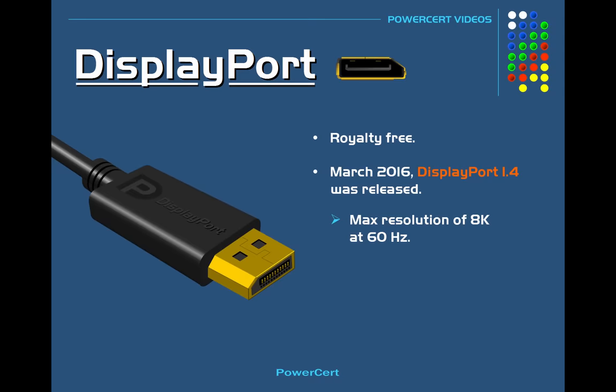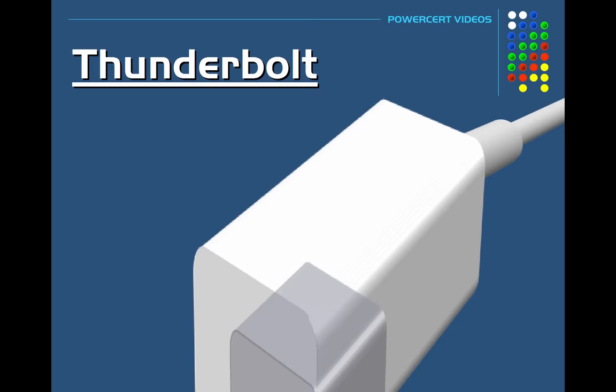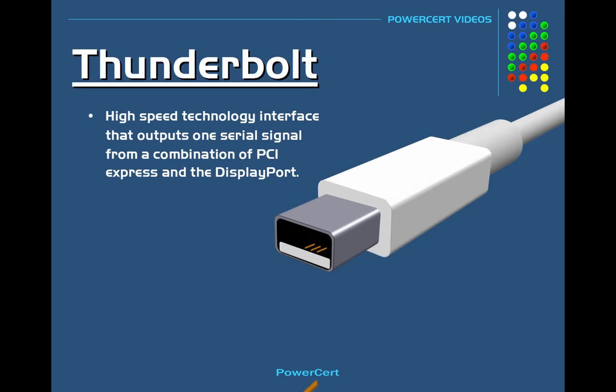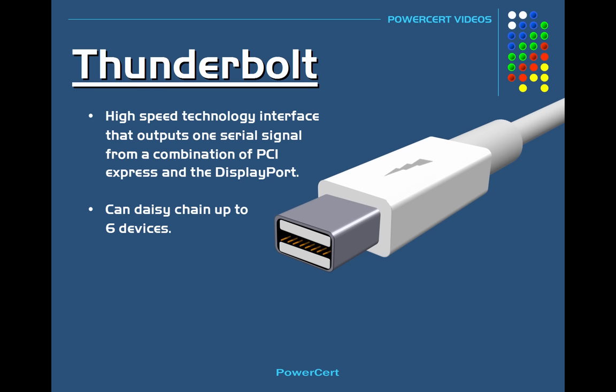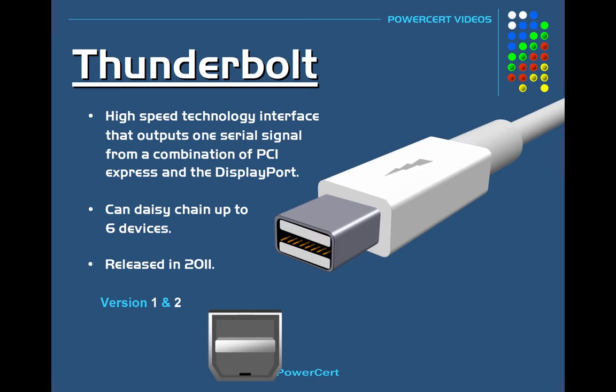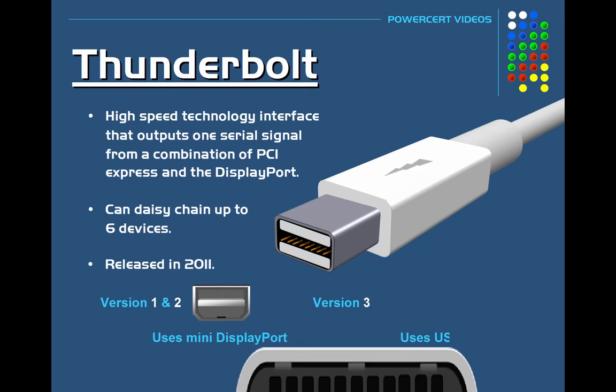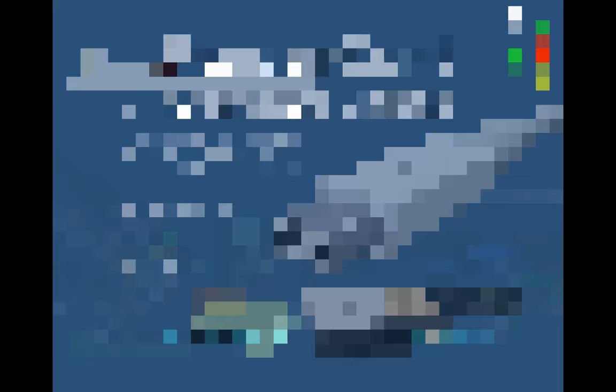The last port we're going to talk about is Thunderbolt. Thunderbolt is a high-speed technology interface that outputs one serial signal from a combination of PCI Express and the DisplayPort. Thunderbolt is not just for connecting video, but it's also used for attaching other external peripherals, and it can daisy-chain up to six devices. Thunderbolt was released in 2011 and was mainly used in Apple products, but has since become available to PCs. There are three different versions of Thunderbolt. Versions 1 and 2 use the same connector as the Mini DisplayPort, and version 3 uses a USB Type-C connector.